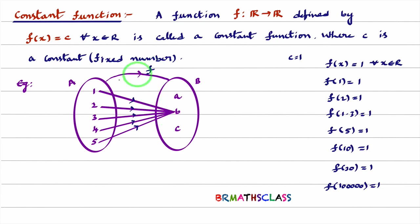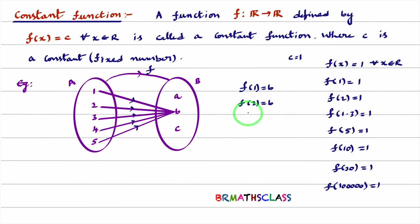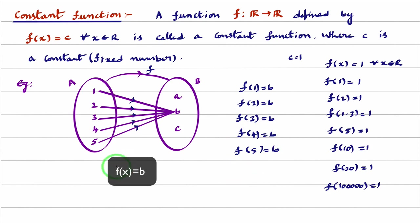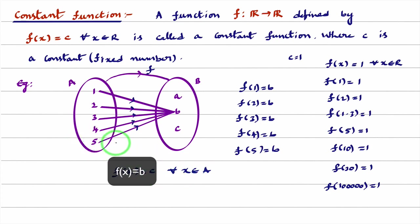You can see f(1) = b, f(2) = b, f(3) = b, image of 4 is also b, and image of 5 is also b. From the diagram, we can understand that f(x) = c for any x belonging to set A. This function is known as a constant function.